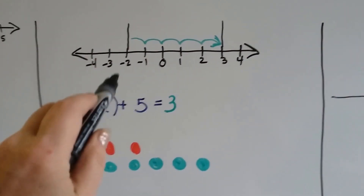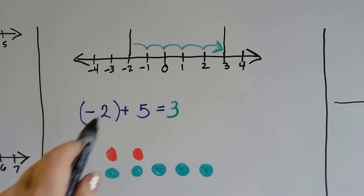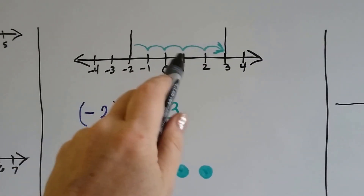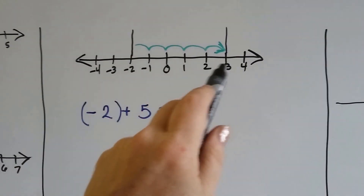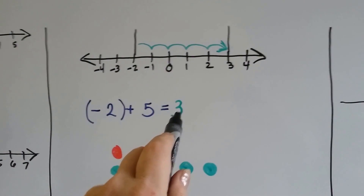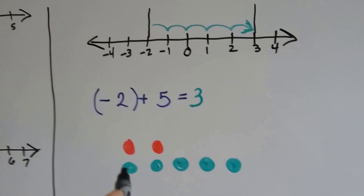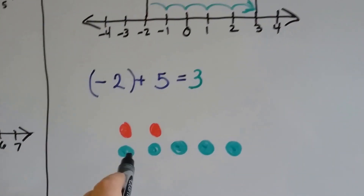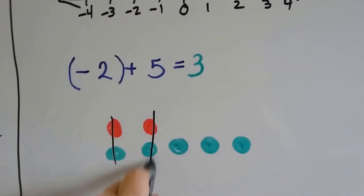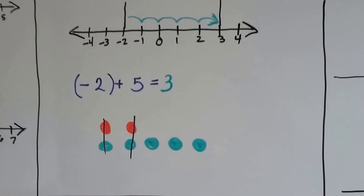We're at negative 2 on the number line — we're below zero — and we're going to add 5: 1, 2, 3, 4, 5, and that gets us to a positive 3. So we have 2 negative chips and we're adding 5 positive chips. These cancel each other out and we're left with 3 positive chips.